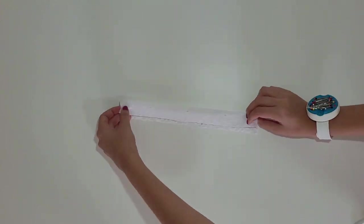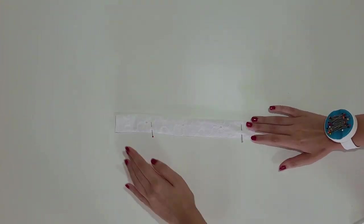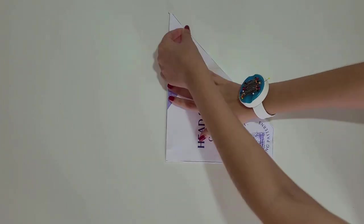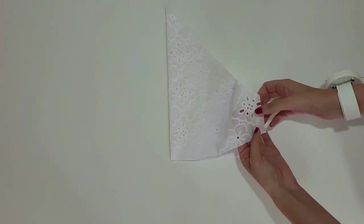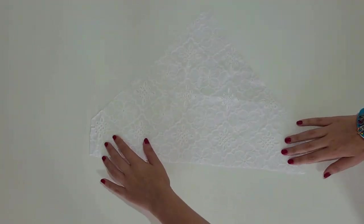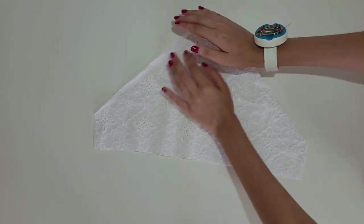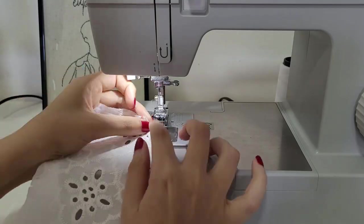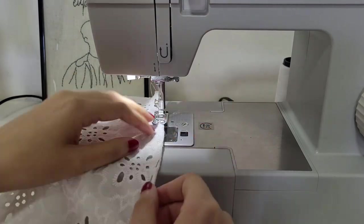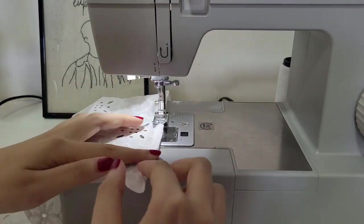Fold the band piece in the middle and sew it at the edge. For the main piece you just need to hem the edges by folding it twice and sewing. I'm trying to make it as thin as possible so it looks more delicate.